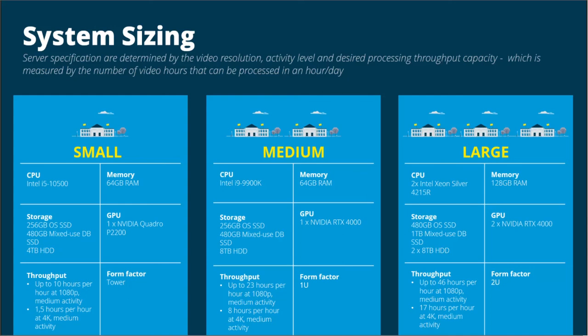Looking at the small build, a few things stand out: 64 gigs of RAM, a Quadro P2200, and a mixed-use SSD. As it turns out, video is actually buffered in RAM — as Rapid Review processes the video, it pulls it off the hard drive after import and stores it in RAM to work with it. RAM is very quick, much quicker than even enterprise SSDs, so having that much RAM really boosts system performance. The GPU is expected, as we discussed — that's not too surprising.